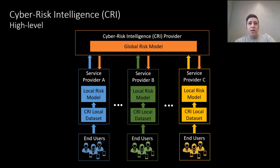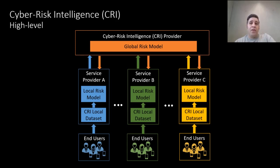Here in the figure, you see a high-level overview of our system. The system model involves the following entities: CRI providers, service providers, and end users. Service providers provide users with online services through their mobile phones. End users use their mobile phones to access services offered by service providers and may perform security-sensitive operations such as login or financial transactions. Service providers conduct risk detection and build local risk models using their own local datasets. The CRI provider is responsible for aggregating local risk models built by service providers into a global model and sending it back to the service providers for risk detection.